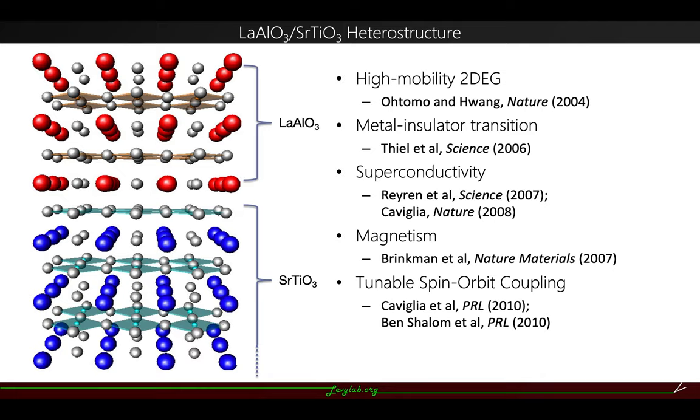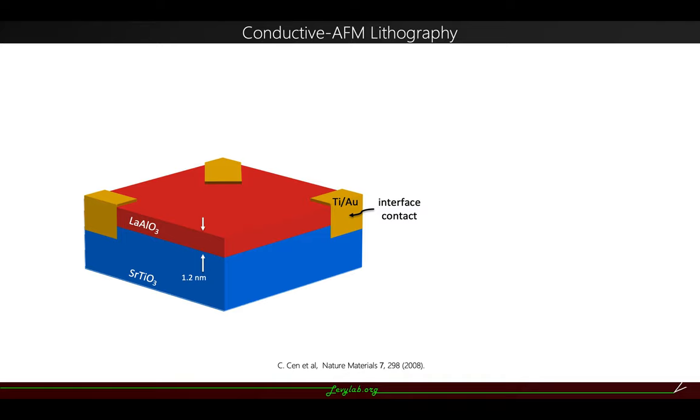And with the metal insulator transition, we have developed a unique technique called conductive AFM lithography at the interface, which can be used to pattern nanostructures such as nanowires and tunneling barriers. To do that, we start from three unit cell LAO on a steel substrate, which is insulating but highly tunable. The titanium and gold are here as the interface contact.